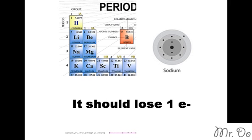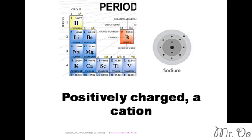So now because sodium loses one electron, it will only have ten electrons, and then it will have eleven protons. So now it's positively charged. In this case, what would it be called? Yes, a cation.